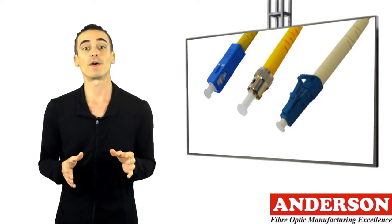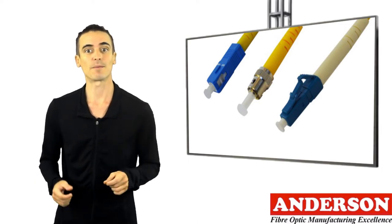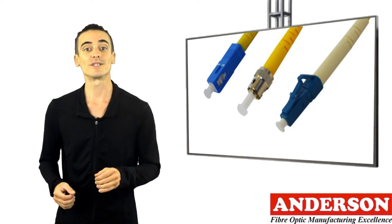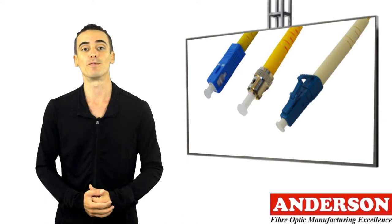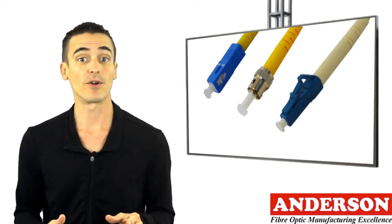Adding in a curved ferrule end face for physical contact between connectors reduced losses to levels below 0.3 dB for both multimode and single-mode varieties. From very early on, colored boots were used to differentiate between multimode fiber and single-mode fiber.